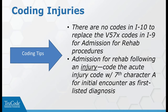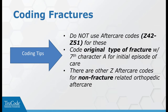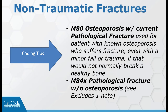For injuries, we're no longer coding the V57 codes and must code the injury with the seventh character - probably A for initial or active care for that injury. For fractures, code the original fracture with seventh character A for the initial or active episode rather than an aftercare code. For non-traumatic fractures, there is the M80 osteoporosis with a current fracture combination code, usable when the fracture would not normally break a healthy bone. The M84 category covers pathological fractures without osteoporosis documented.